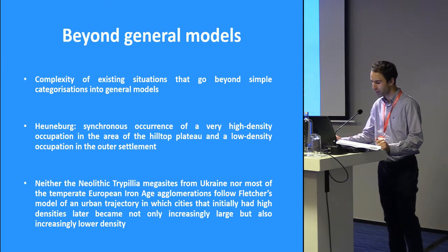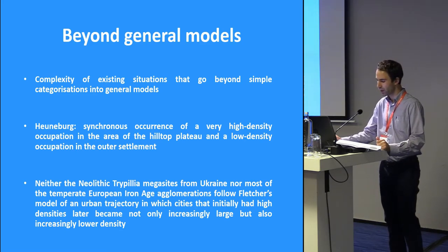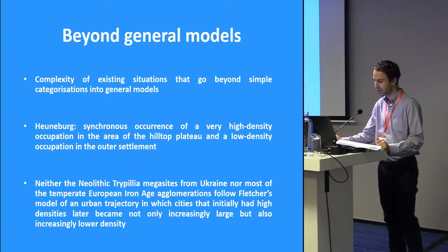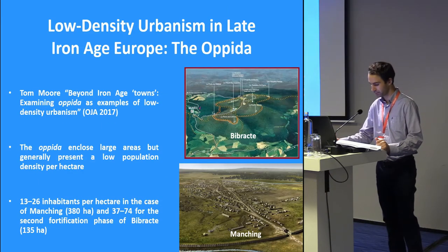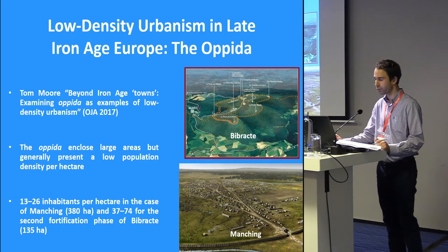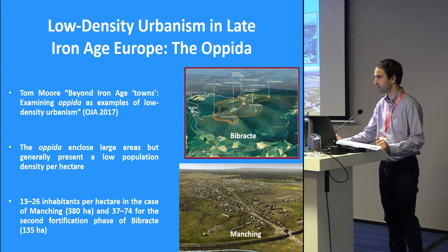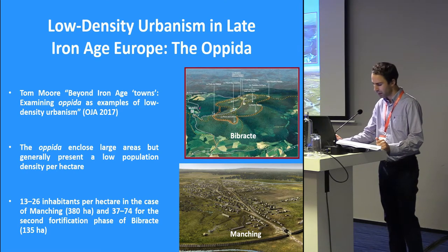At the Heunenburg, for example, the desynchronous occurrence of a very high-density occupation on the hilltop and a low-density occupation in the outer settlement is notable. Neither the Neolithic Tripilia megasites from Ukraine, nor most of the temperate European Opida, follow Fletcher's model of an urban trajectory, in which cities that initially had high densities later became not only increasingly large, but also increasingly lower density. Regarding the Opida, my colleague Darren Collington Moore has just published an article in the Oxford Journal of Archaeology entitled 'Beyond Iron Age Towns,' examining the Opida as examples of low-density urbanism, and I refer to his excellent paper for a more detailed insight.